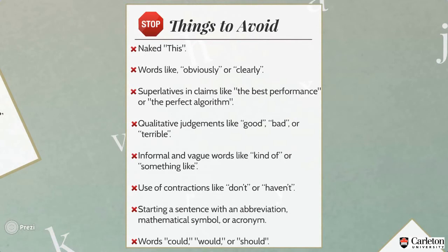Now I will provide some common mistakes that students usually make. The first thing to avoid is the use of naked "this" — meaning a "this" without a noun after it. Then the question becomes: this what? For example, say "this algorithm shows a good performance," not "this shows a good performance." If it is obvious to you, it may not be obvious to others.